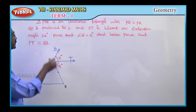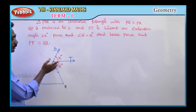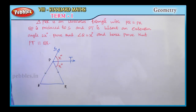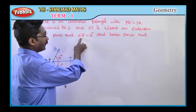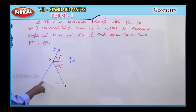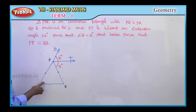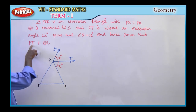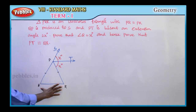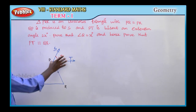That angle measures 2x degrees, and PT is the bisector line — specifically the angle bisector of the exterior angle. Then, we need to prove that angle Q is equal to x degrees. We also need to prove that PT is parallel to QR.